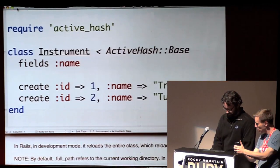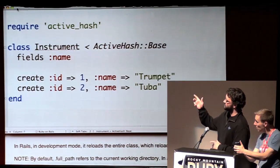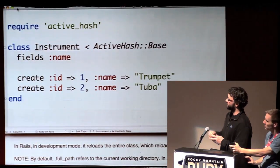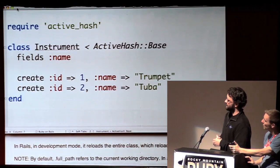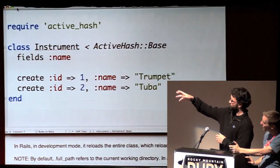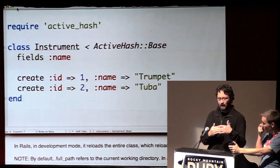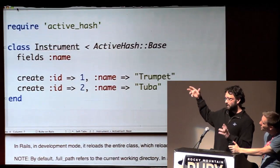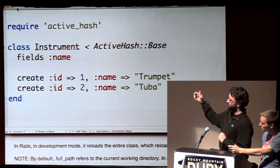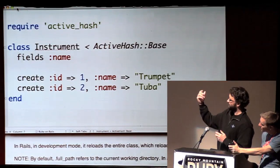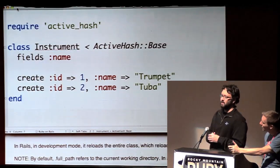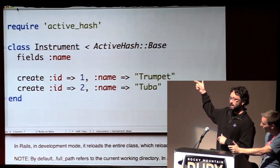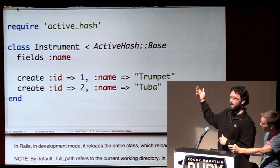This is a pretty basic example of ActiveHash. You make your class, you define a field — a little bit like a data mapper — and you say my record is a name, you have an ID and the name. You sort of create these records directly in the class, and after you do that, if you say instrument.all from anywhere in your codebase, you're going to get two records that look and behave a lot like ActiveRecord. You can say instrument.id and get one, instrument.name. You also get a lot of very similar ActiveRecord finders, like you could say instrument.findByName, and if you gave it 'trumpet' you'd get back ID number one.